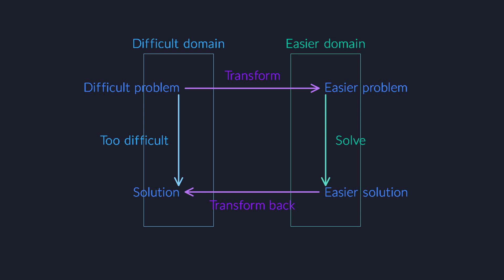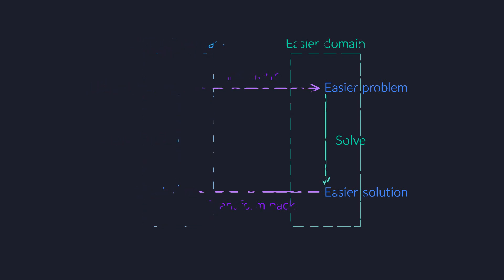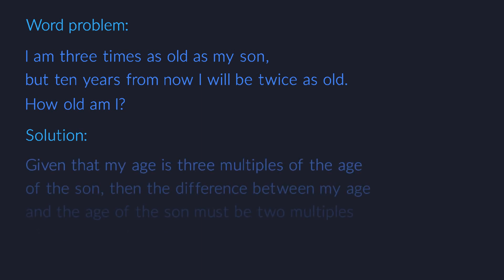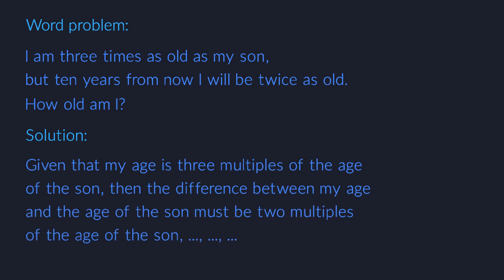More than a thousand years ago, mathematicians would solve problems by explicitly spelling out their reasoning in long-winded paragraphs. They would start from a word problem like 'I'm three times as old as my son, but ten years from now I will be twice as old. How old am I?' Then they'd solve such a word problem by spinning long sentences. You know, given that my age is three multiples of the age of the son, then the difference between my age and the age of the son must be two multiples of the age of the son, etc.